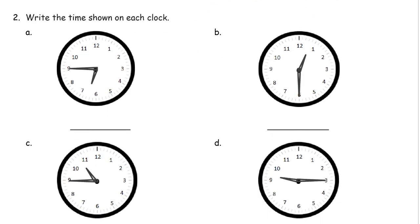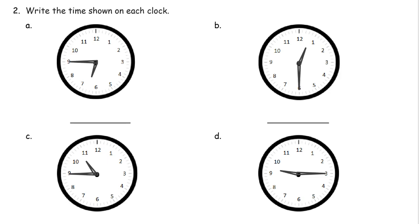Write the time shown on each clock. We're going to read the analog clock faces and write it down to make it look like a digital clock. We can see here the hour hand is the short hand. The memory key that works for a lot of people is that the word hour is short, and the word minute is longer. So the shorter clock hand is the hour hand, and the longer one is the minute — even though an hour is a longer amount of time. Hours go here by the colon, and minutes go here. It goes hours first, then minutes, working from left to right.